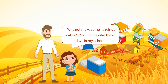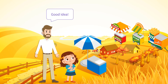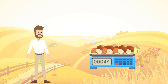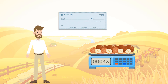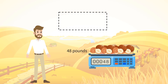Uncle Josh believed it to be a good idea and started buying the hazelnuts. With his experience, he could sell out 200 hazelnut cakes at the weekend fair, and he should buy 48 pounds of hazelnuts according to the recipe. After his purchase from the farm, Uncle Josh found out he had lost the recipe. He needed to keep a record of the cost to decide the price of the cake. The only thing he remembered was he paid $979 for 48 pounds of hazelnut.